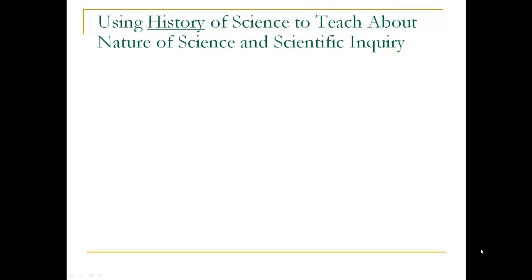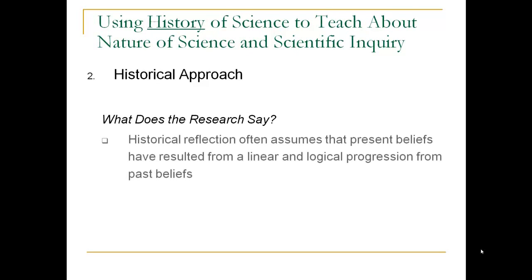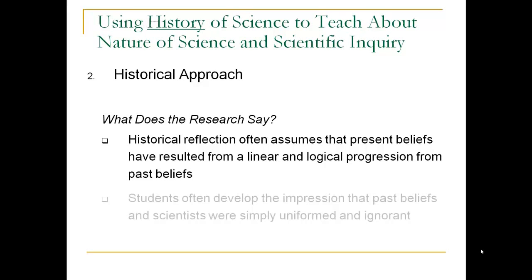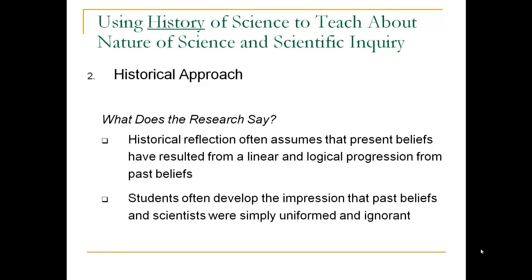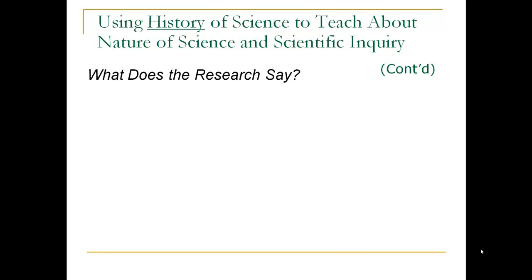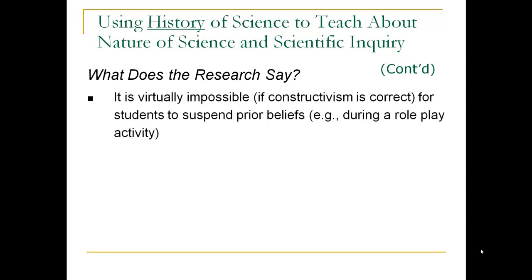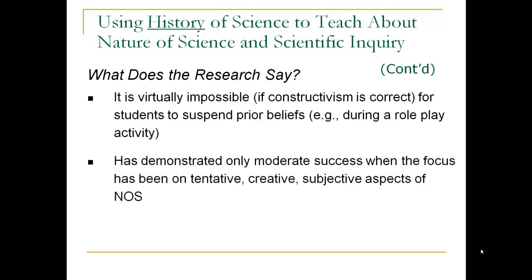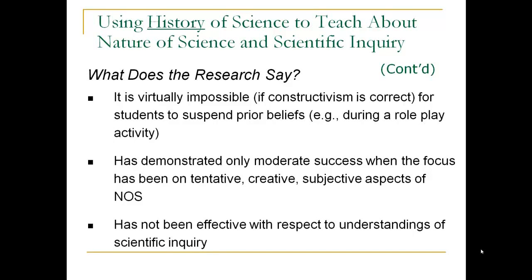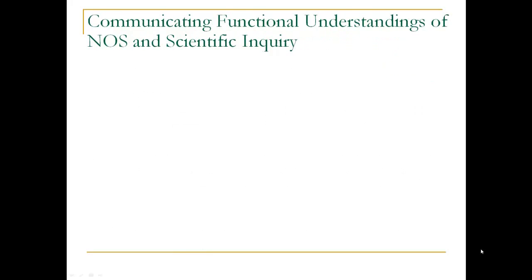Another approach is using history of science to teach about nature of science and scientific inquiry. What does the research say about the historical approach? It often assumes that present beliefs have resulted from a linear, logical progression from past beliefs, which is not necessarily the case. Students often develop the impression that past scientists were simply uninformed and ignorant, which again is not the case. It's also virtually impossible for students to suspend prior beliefs during a role-play activity studying the history of science. It has demonstrated only moderate success when the focus has been on the tentative, creative, and subjective aspects of nature of science, and has not been effective with respect to understandings of scientific inquiry.